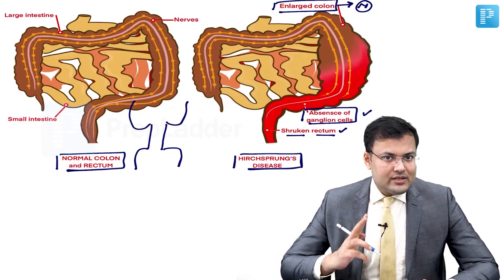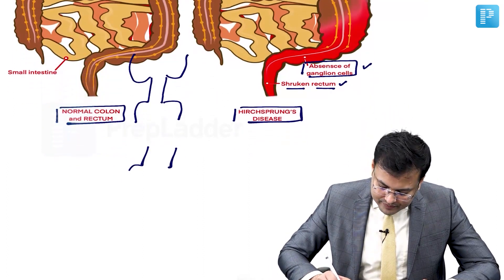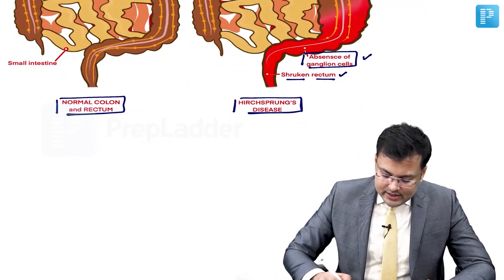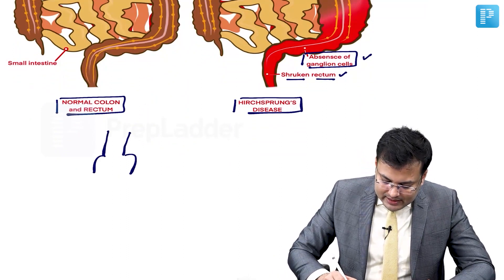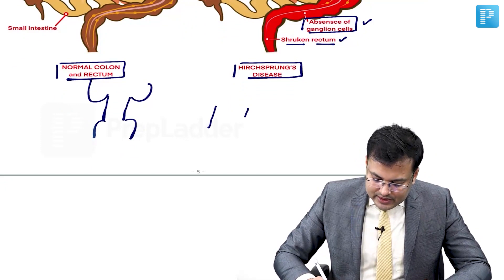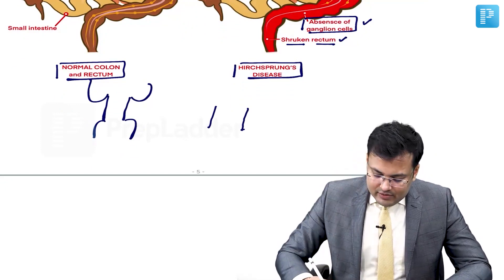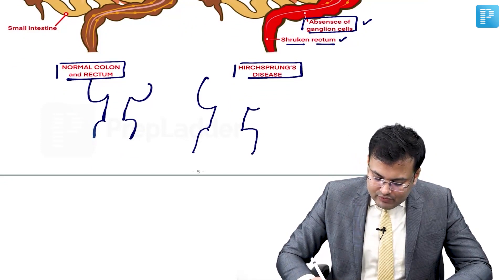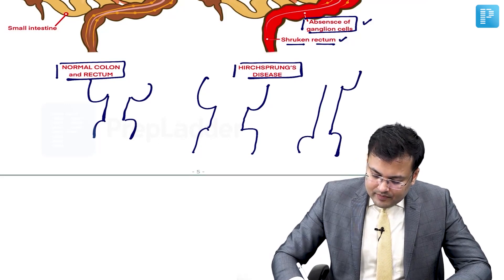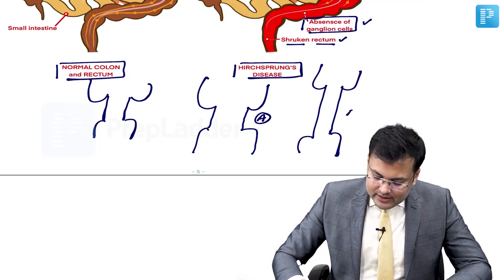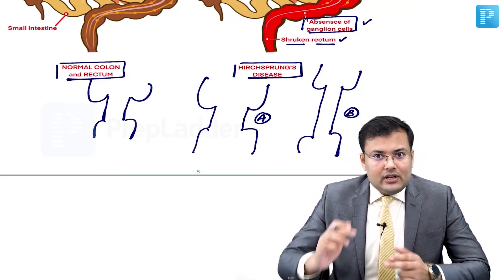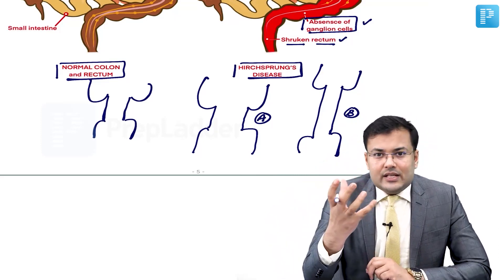There can be two presentations depending on segment length. In patient A with shorter segment involvement, the involved segment is shorter. In patient B, the involved segment is longer and narrower. Signs and symptoms and age of presentation are both dependent upon the length of segment involved and the severity of contraction.